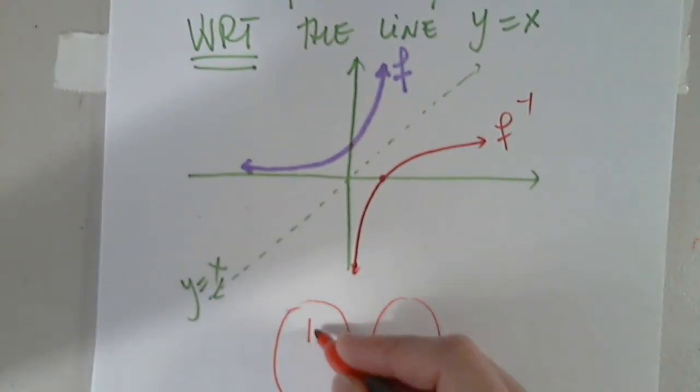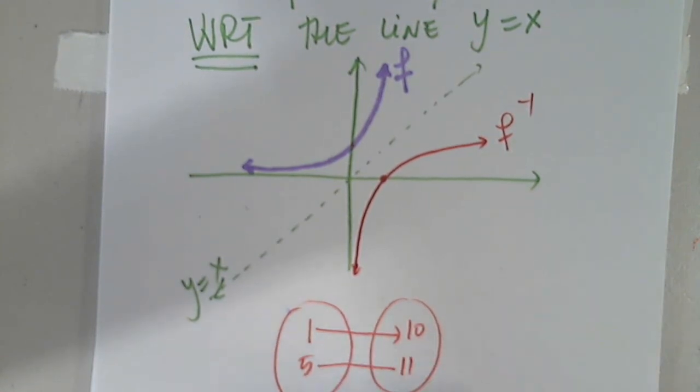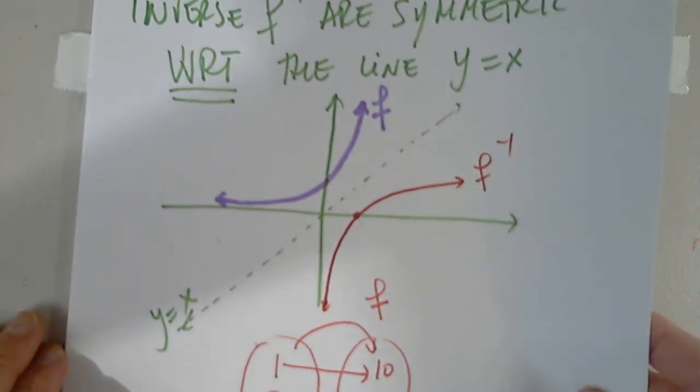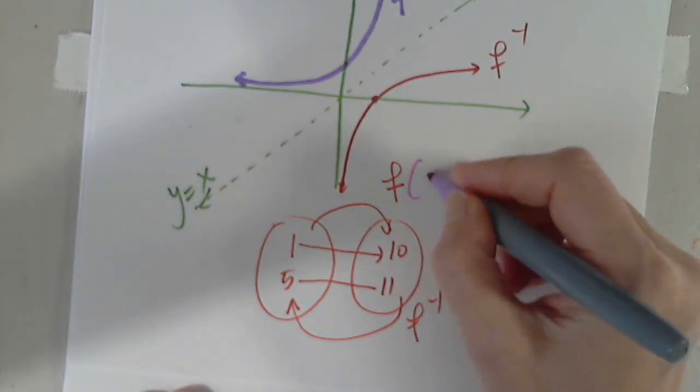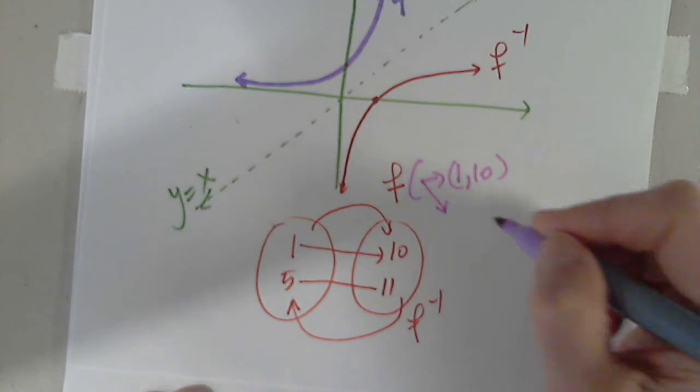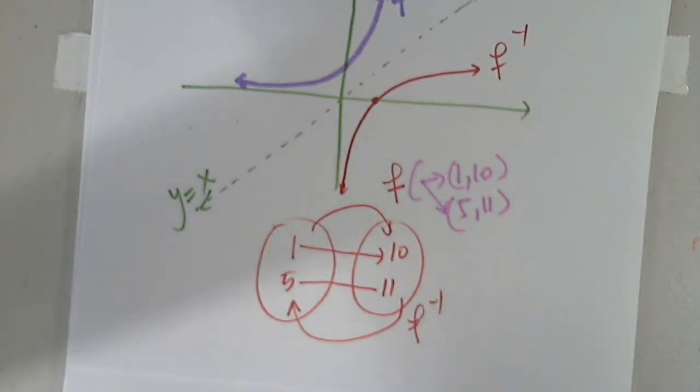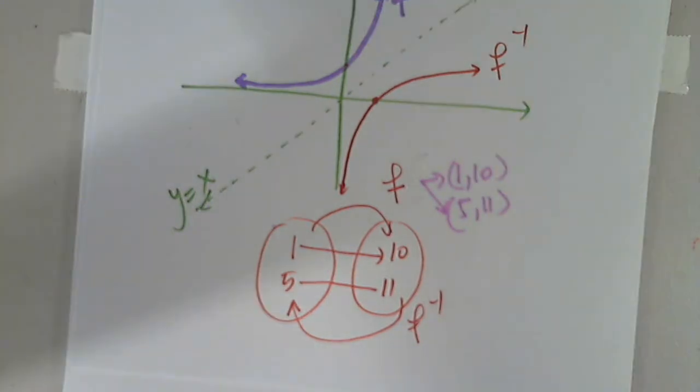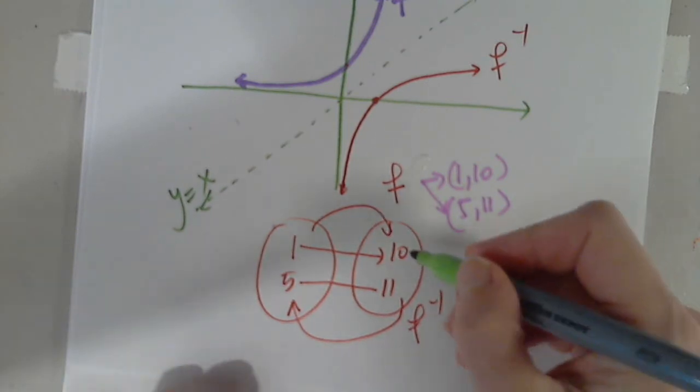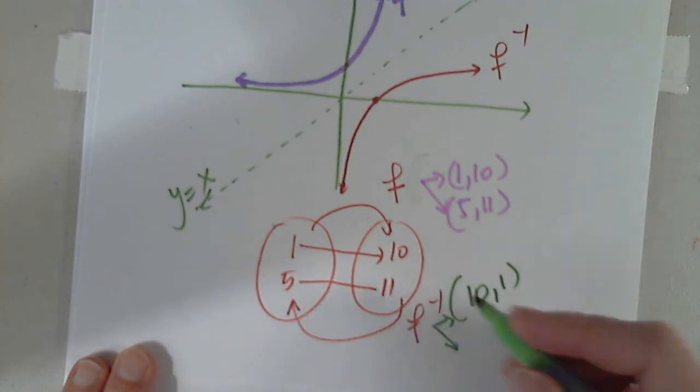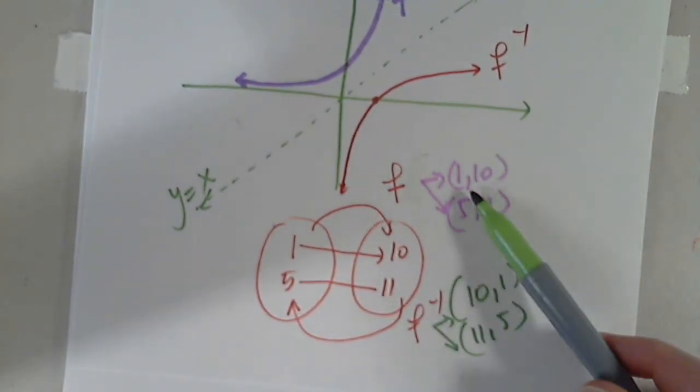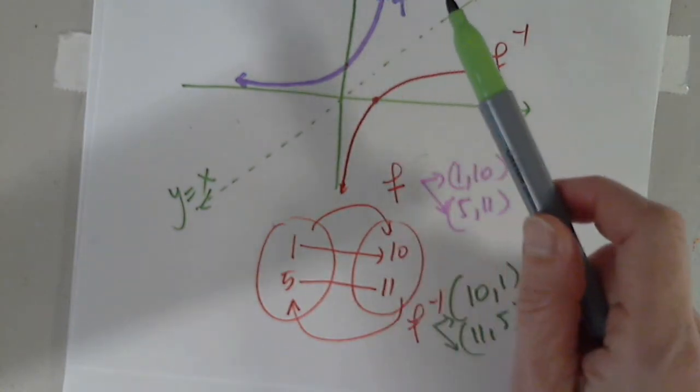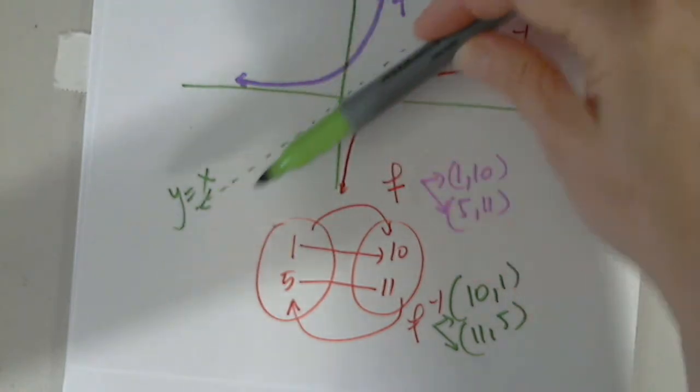Let's go back to our bubbles. Let's say 1 corresponds to 10. 5 corresponds to 11. So, this is function f, and this is its inverse, f inverse. The points for f are 1, 10. And what is the other? 5, 11. But what are the points for f inverse? The points for f inverse will be 10, 1, and 11, 5. See what happens? The x and y coordinates are swapped. So, for f, 1, 10. For f inverse, 10, 1. And that's exactly what happens. That's why the two graphs will be always symmetric with respect to y equals x.